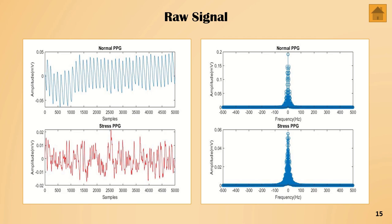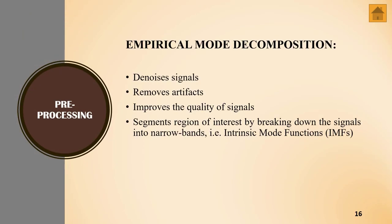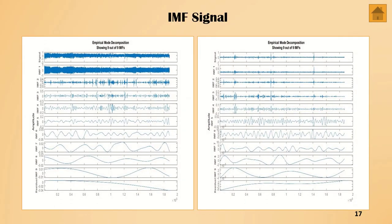These are the raw samples of PPG in time and frequency domains. In the second step, we denoised the samples and segmented our region of interest by breaking the samples into intrinsic mode functions (IMFs) using empirical mode decomposition (EMD). This enabled us to find that the first three IMFs showed a difference, and among these, IMF1 showed the most colossal difference, which is very clear from the images.